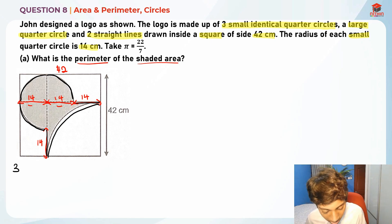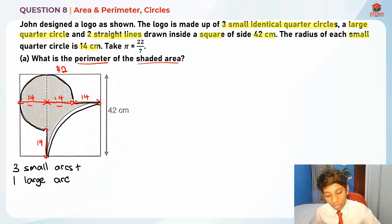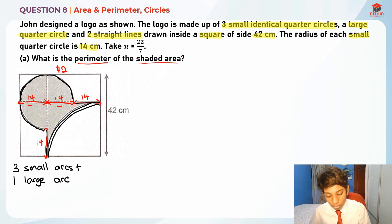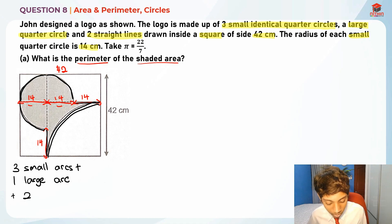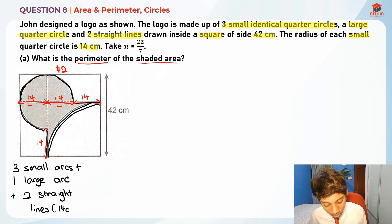So we are going to find three small arcs plus one large arc. An arc is this curved part here — I've gone through this in all my videos. So that's the one large arc over here, plus two straight lines of 14cm each.